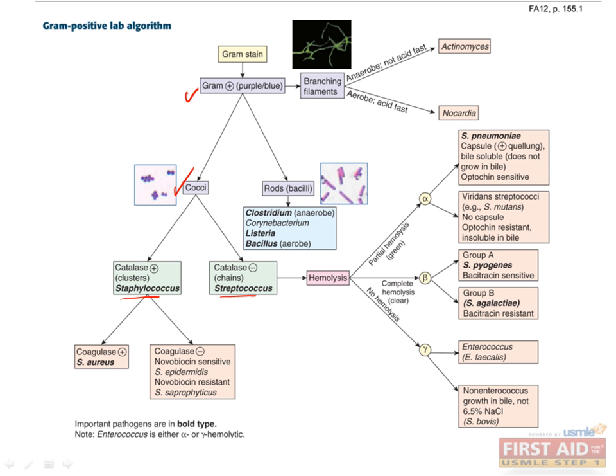It's easy to differentiate the two. Staphylococcus will present in clusters and will produce catalase-positive. Streptococcus will present in chains and will not produce catalase — catalase-negative. Catalase is an enzyme that breaks down hydrogen peroxide into water and oxygen. Just remember that staph will make catalase because it has more staph to do the extra work. So you see purple-blue cocci in clusters that are catalase-positive — you've identified that it is staphylococcus.